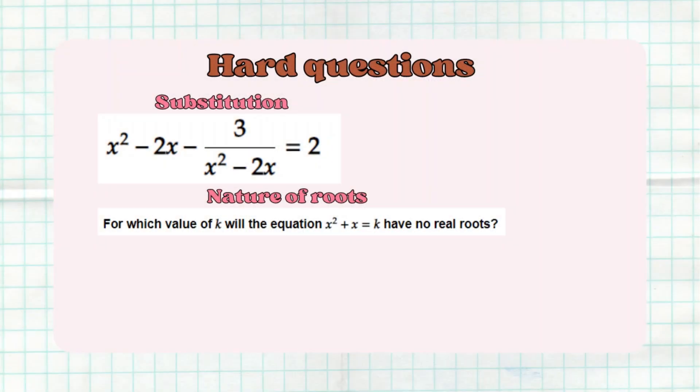Under Solve for X, they could sprinkle some hard questions. Under those hard questions, it could be substitution sometimes — I've seen a question like that — or sometimes they sprinkle something from nature of roots. Nature of roots doesn't always come out; it falls under the harder questions. But if you know your nature of roots and how they operate, you can find those types of questions pretty simple.